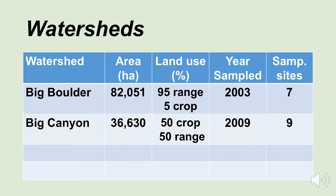Big Boulder Creek is in the Owyhee Mountains in southwestern Idaho. The watershed itself was 82,000 hectares, and the land use in this watershed was 95% range and 5% cropland. We sampled this back in 2003 — a graduate student used Big Boulder Creek as their thesis site — and they had seven sampling sites within Big Boulder Creek.